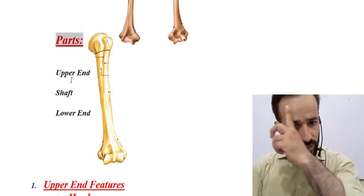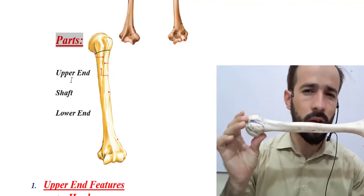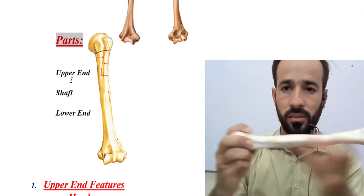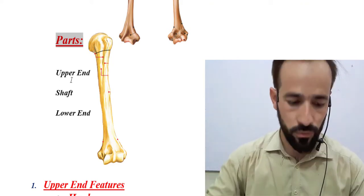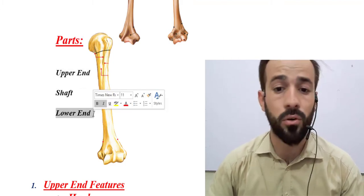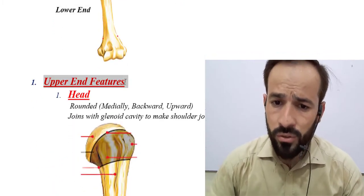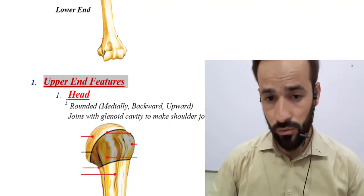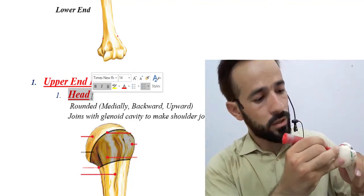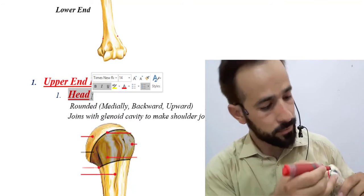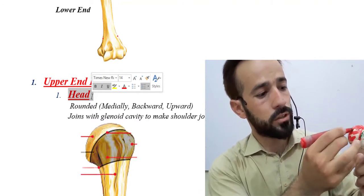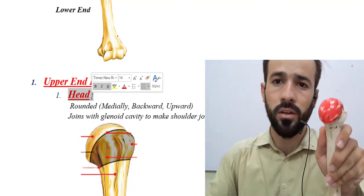Now let's go through the external features of this bone. Like all long bones, it is divided into three parts: the proximal epiphysis, distal epiphysis, and shaft — or upper end, lower end, and shaft. In the upper end, the first external feature is the head — a rounded head that forms the glenohumeral joint.